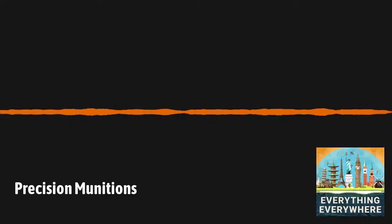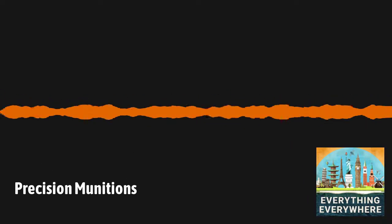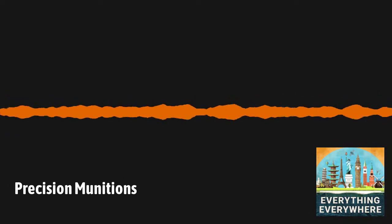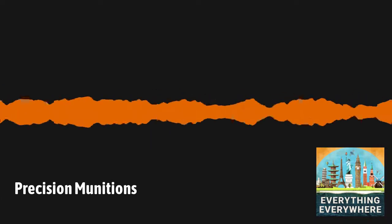This inaccuracy has led to the development of ever more precise munitions, which is still going on today. Learn more about precision munitions and how it's possible to drop a bomb in a pickle barrel on this episode of Everything Everywhere Daily.